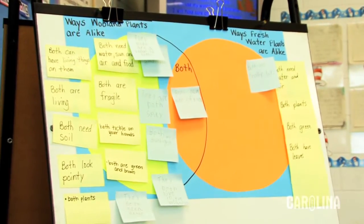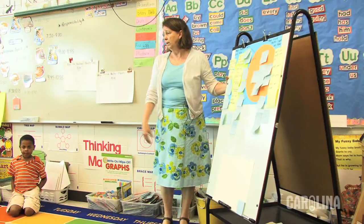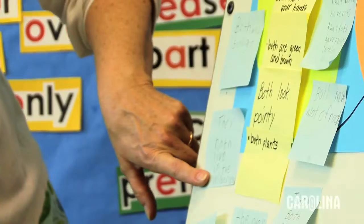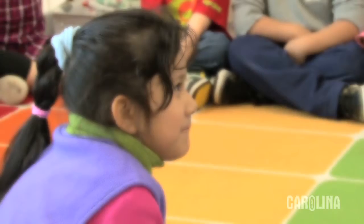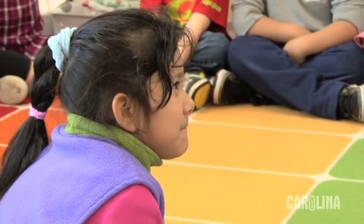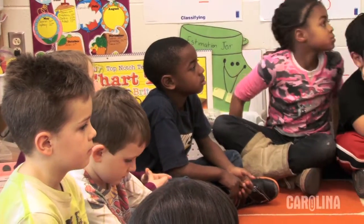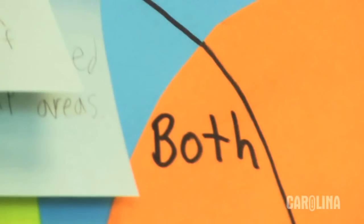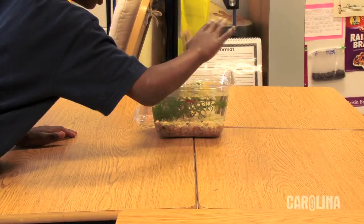Look at your observation skills. This is what you have said. This is what you recorded today. These are your observations that are on blue. You did a great job. And now we are going to compare and see what we can add to the middle section of how both the woodland plants are like the water plants.